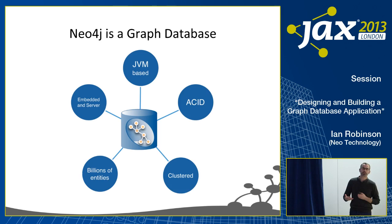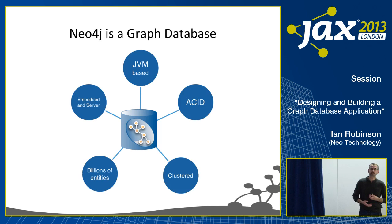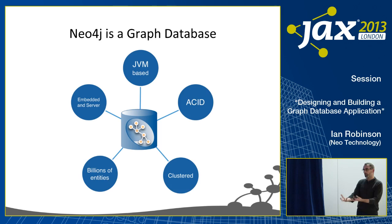Neo4j also exposes an XA transaction resource, so you can have it participate in distributed transactions. Some people use it together with another data technology, imposing a graph fabric over the top of another data source. In that case, you often want to update your data within the context of a distributed transaction so that both sources are consistent once the transaction is completed, and Neo4j can accomplish that.